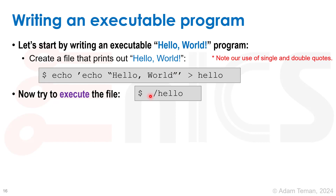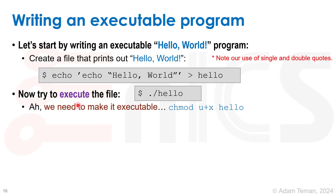Now let's try to execute the file. We do dot slash hello. We'll try to execute the file, but there is a problem because the file is by default not executable, and therefore we will get an error. We're going to need to make it executable, and we'll do chmod u plus x hello. That will make it executable, and now we can run dot slash hello, and it will print out hello world as expected.